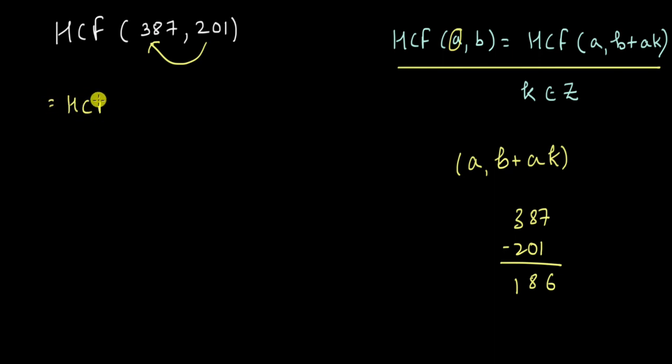So this should be equal to HCF of 186 and 201. So I kept one number as the same and I subtracted one multiple of 201 from 387. I get 186 and 201.